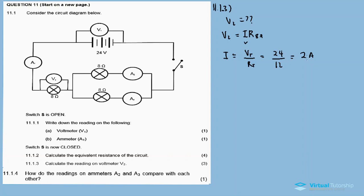Now I can calculate V2. V2 equals 2 amperes times 8 ohms, which equals 16 volts. This is our answer for V2.